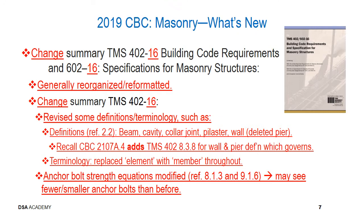Regarding the TMS Masonry code, there's a new reference standard for the 2016 edition, which has been generally reorganized and reformatted. For building code requirements in 402-16, there have been changes in definitions and terminology — for example, definitions for beam, cavity, collar joint, pilaster, and wall. Interestingly, the definition for pier has been deleted; however, CBC 2107A.4 adds section 8.3.8 for wall and pier definitions that govern over the model reference. The word 'element' has been replaced with 'member' throughout for consistency.